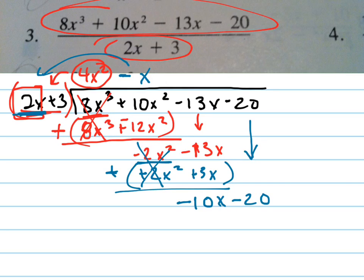How many times does 2x go into negative 10x? In other words, negative 10x divided by 2x is negative 5.